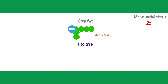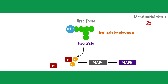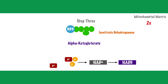In the third step, the enzyme isocitrate dehydrogenase acts on isocitrate, leading to the removal of two electrons and two protons. Both electrons and one proton combine with NAD to form NADH, which will be utilized later in the electron transport system for further ATP generation. The remaining proton is left behind in the mitochondrial matrix. Following this, carbon dioxide is removed from isocitrate, reducing it from a six-carbon molecule to a five-carbon molecule called alpha-ketoglutarate.